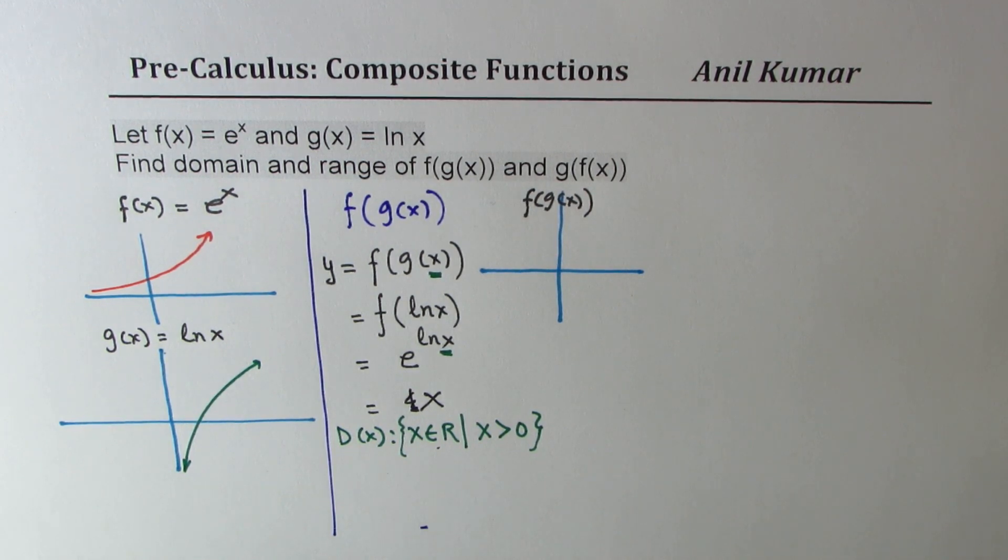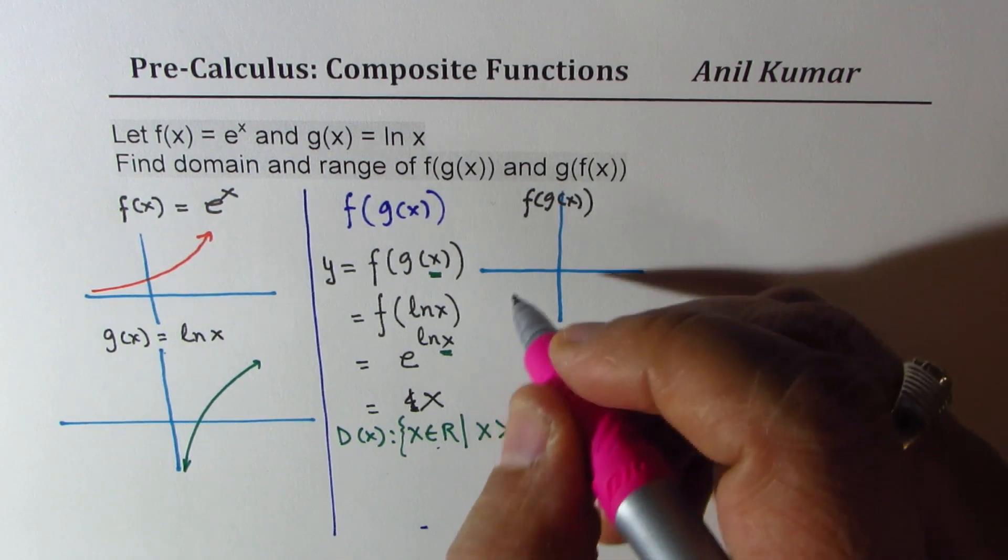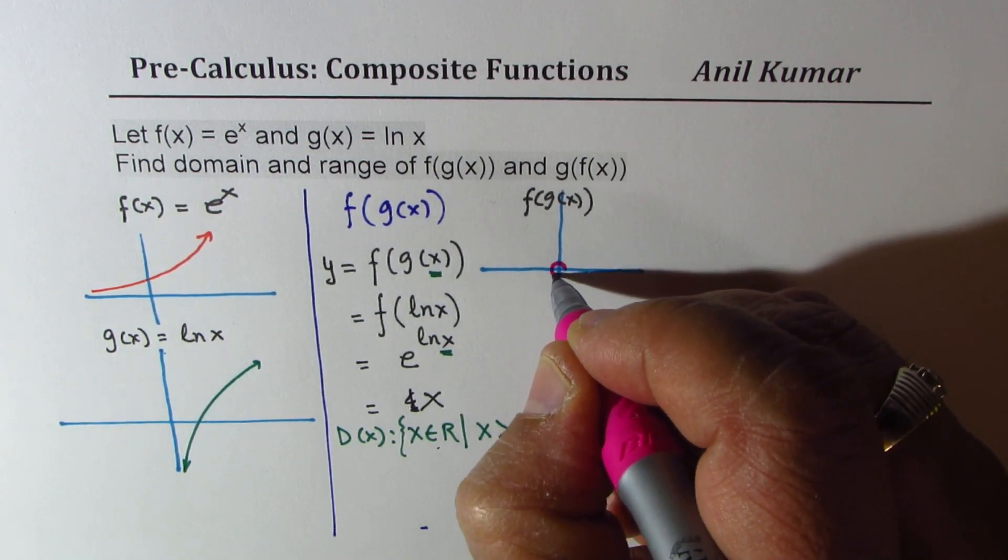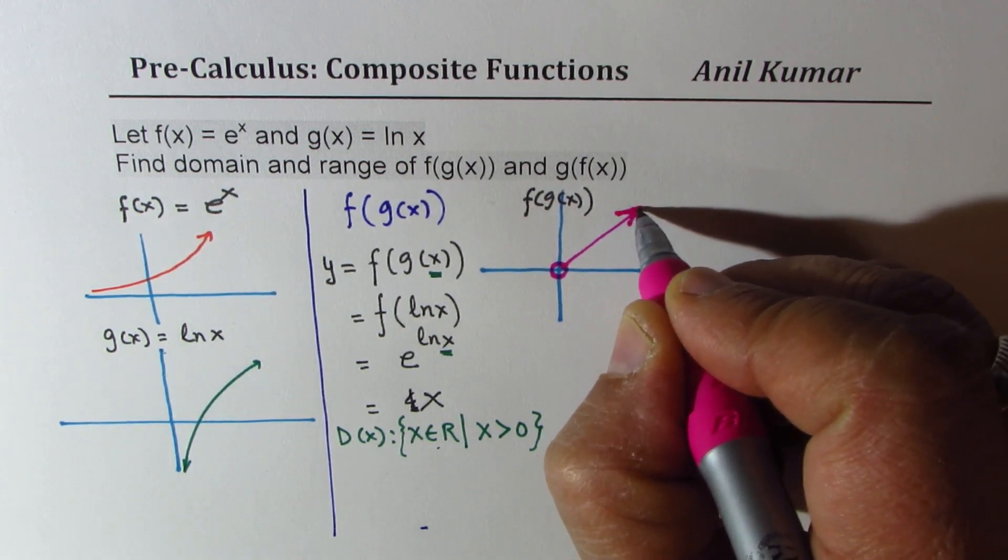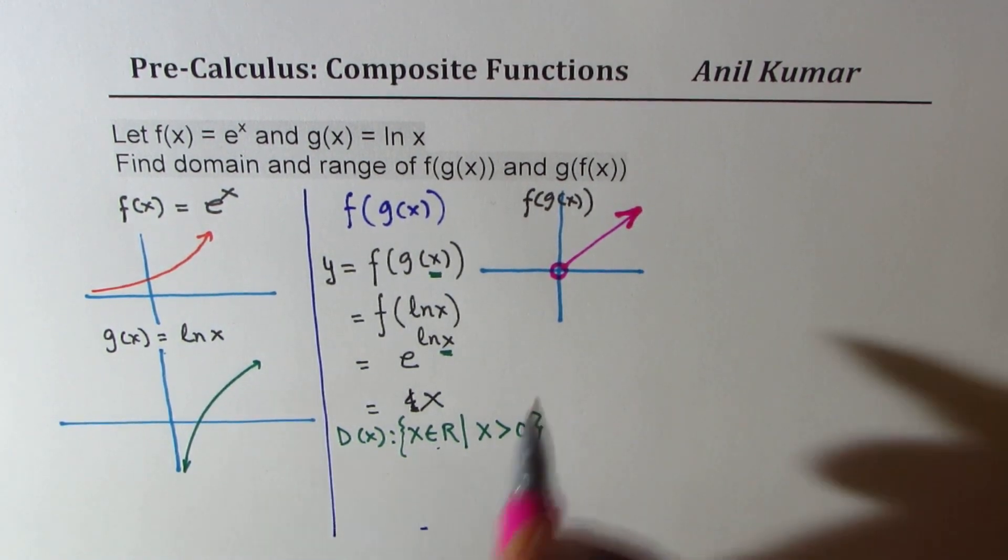x can only be positive value as shown by this particular graph. So in this case, the range, the y value, will be y belongs to real numbers where y is also greater than zero. Do you get that idea?